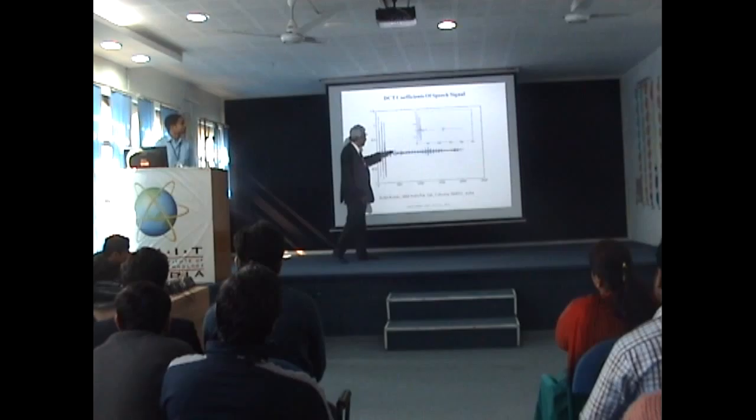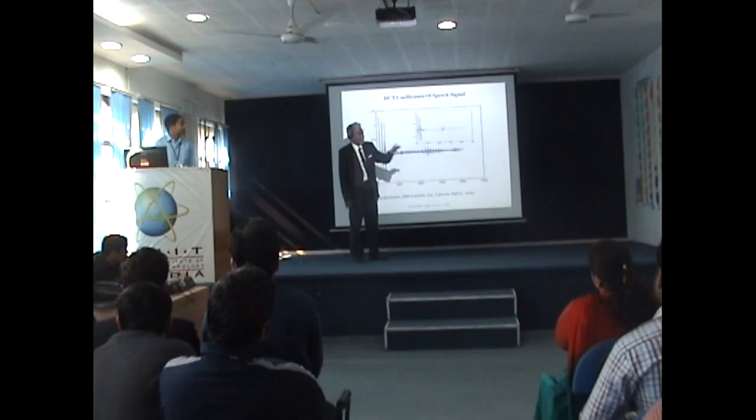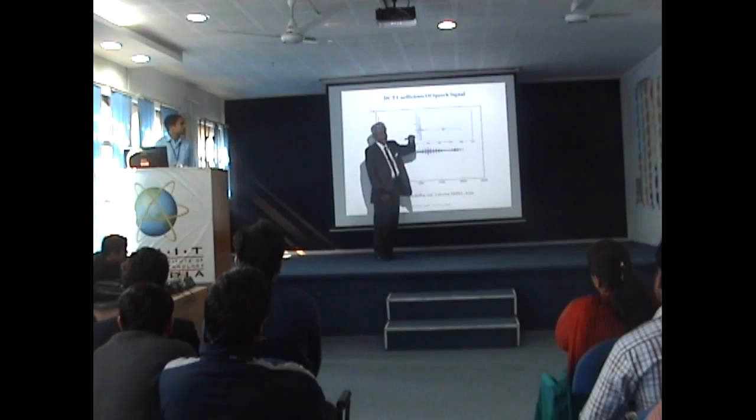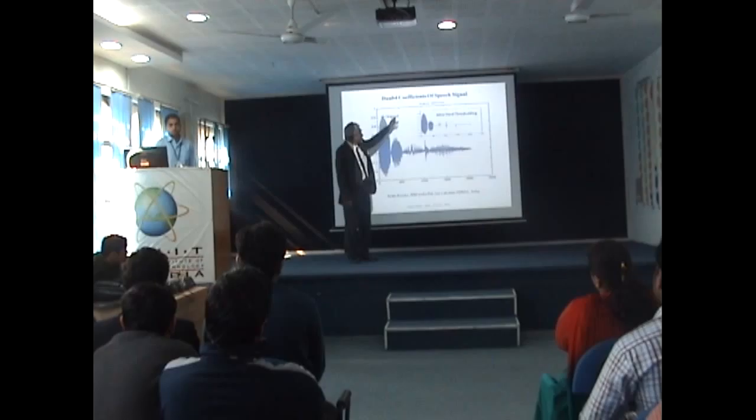Now you threshold it. Thresholding means up to a certain limit you are keeping it and then the rest of the things are gone. So these are your thresholded coefficients. Now do the inversion. Inversion is simply again a matrix multiplication. This is the wavelet coefficient — this is the thresholded wavelet.